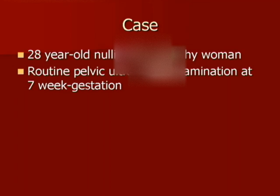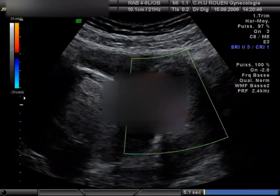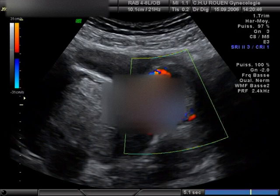A 28-year-old nulliparous healthy woman underwent routine pelvic ultrasound examination at seven-week gestation. She presented a right ectopic fallopian pregnancy four months previously that had been treated laparoscopically in another establishment. She was not aware of any particular findings during this surgical procedure that led to the removal of the ectopic pregnancy by a right salpingotomy.